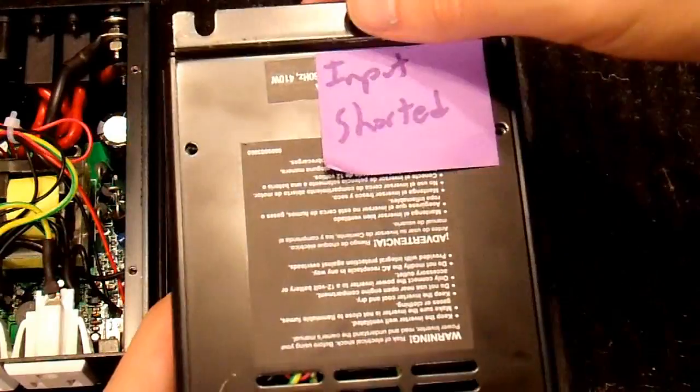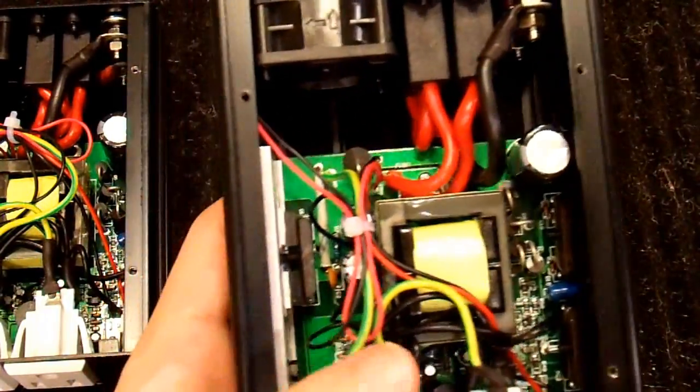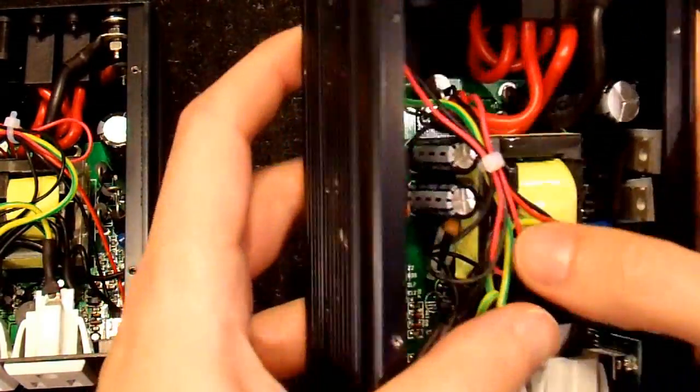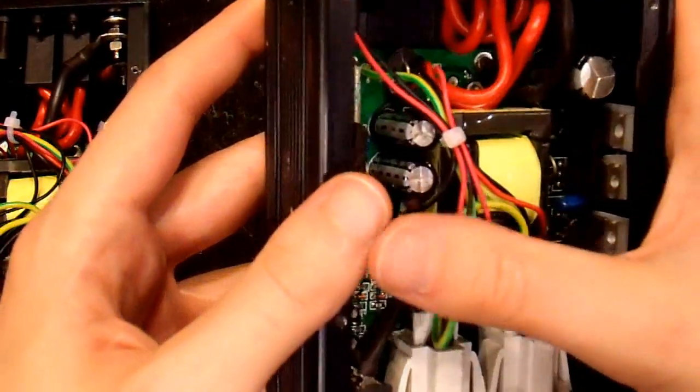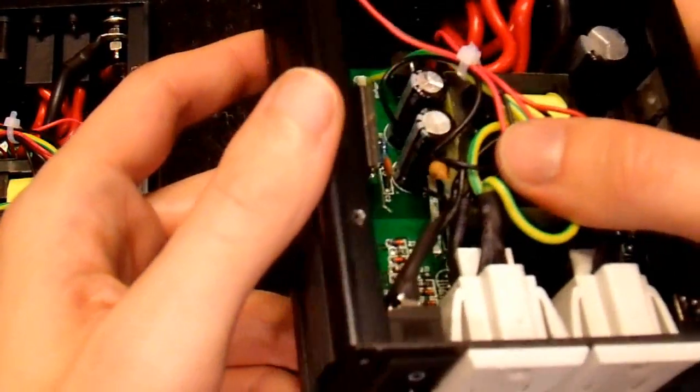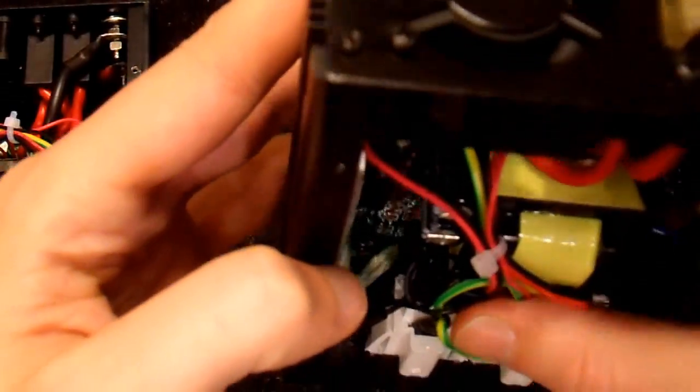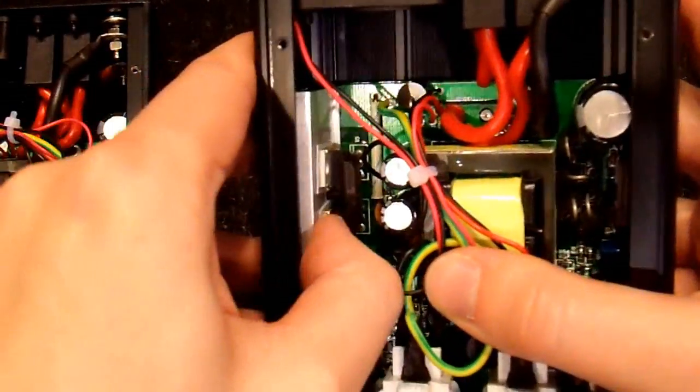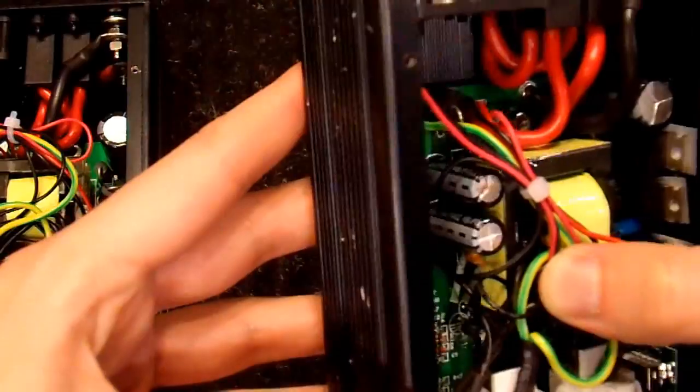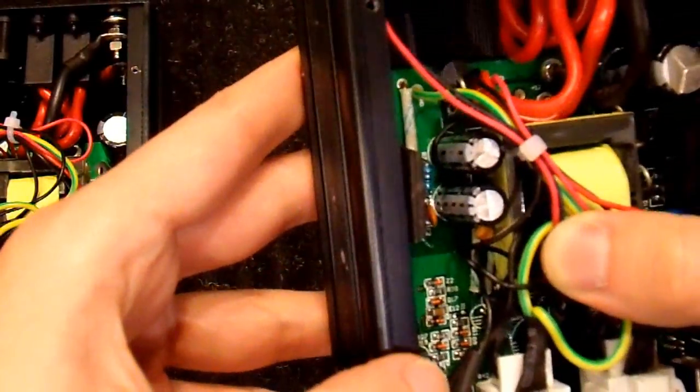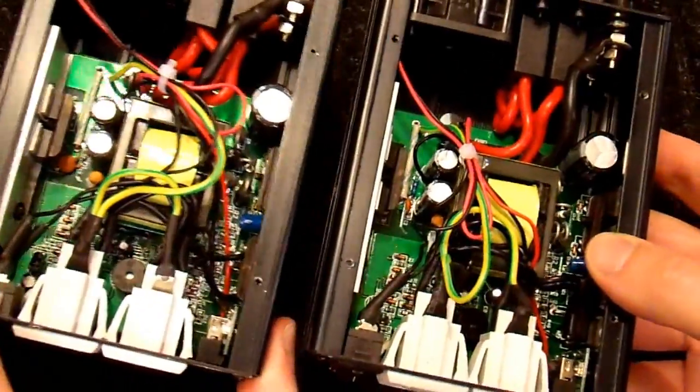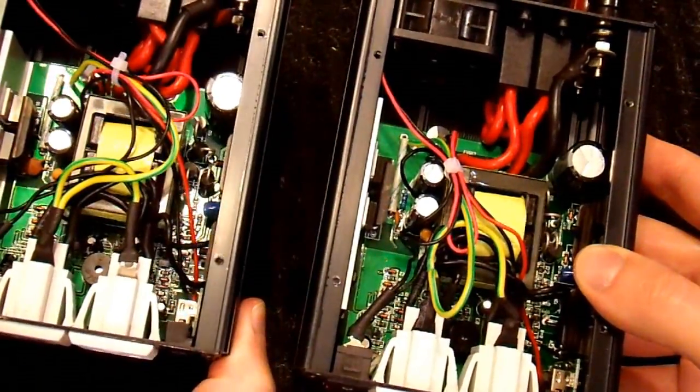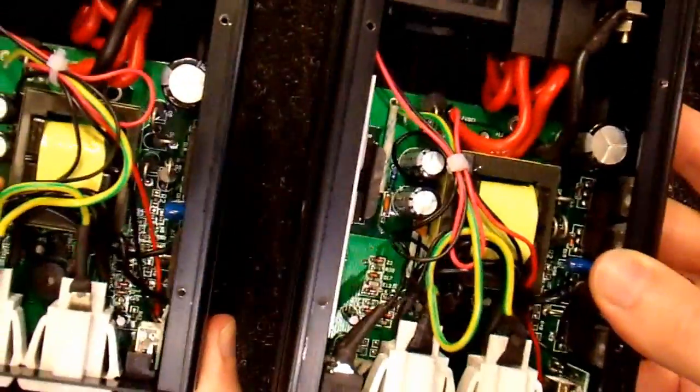But let's check out the other one quick before we get into that one. Input shorted. Let's see if that's true. Pull the cover off, and take a look at it. Once again, I don't see a lot of major issues. I don't see any evidence of shorting on these input FETs. And once again, I don't see a whole lot. So, we're going to take these two inverters and pull the circuit boards out and see if we can figure out what's wrong with these two.